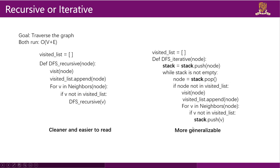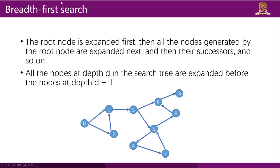Now let's move to breadth-first search. The two characteristics of BFS are: the root node is expanded first, then all nodes generated by the root, then their successors, and so on. BFS works level by level — node 0 has depth 0, its children have depth 1, their children have depth 2 — and we visit nodes at depth 0 first, then depth 1, then depth 2.